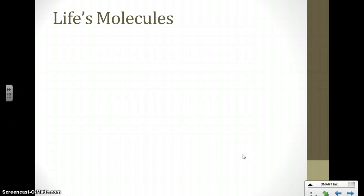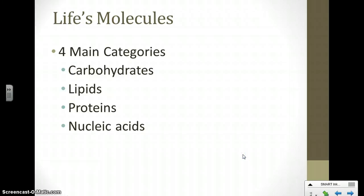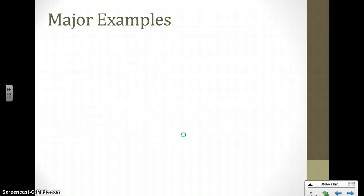So if we look at those major macromolecules of life, there are four main categories: carbohydrates, lipids, proteins, and nucleic acids. So these are all considered polymers. They are very large molecules that have been constructed out of smaller monomers. And all of these are needed for life to occur.